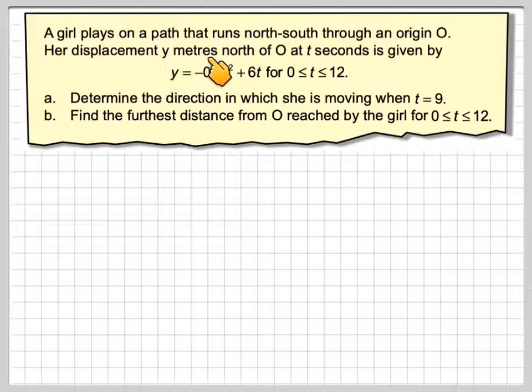A girl plays on a path that runs north-south through the origin O. Her displacement y metres north of O at t seconds is given by y equals minus 0.9t squared plus 6t for t between 0 and 12.